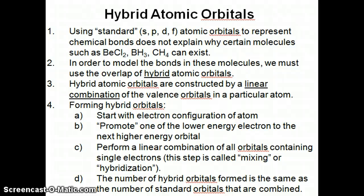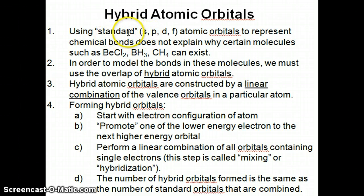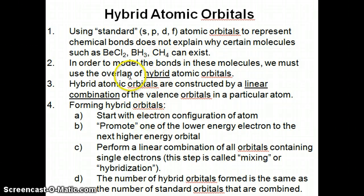Hi everyone. Let's continue with this topic about how to explain the existence of certain molecules where using the simple valence bond model — the overlap of standard atomic orbitals — would not be able to explain why these molecules exist and why we see them the way they are in terms of bond angles and structure. In order to explain why these molecules exist, you have to use a new concept called hybrid atomic orbitals.